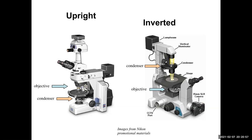The reason for the inverted scope design is that it's easier to access the specimen. In a regular upright scope, the objective is right there and you can't really manipulate your specimen. With an inverted scope, there's all that space on the stage — you could put a big fat dish of cells, for instance, which we do, and just focus up through the container of cells to find the one you want. This is basically a scope used for live cell imaging.